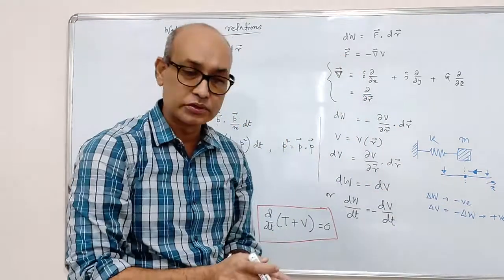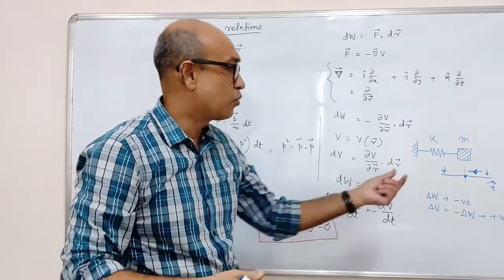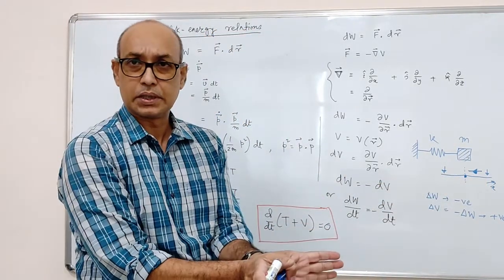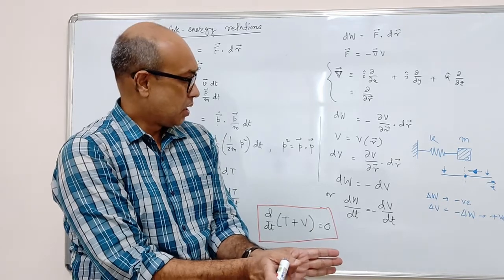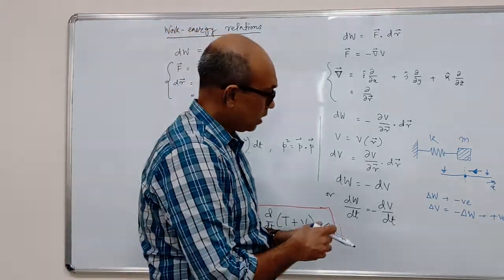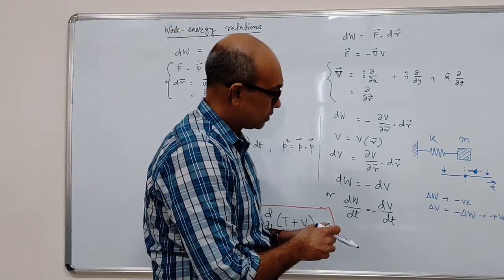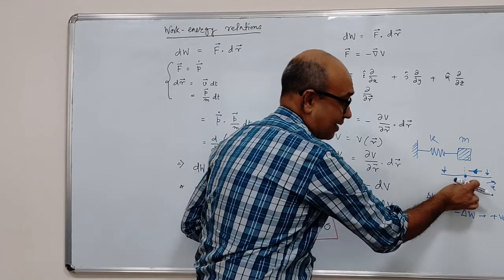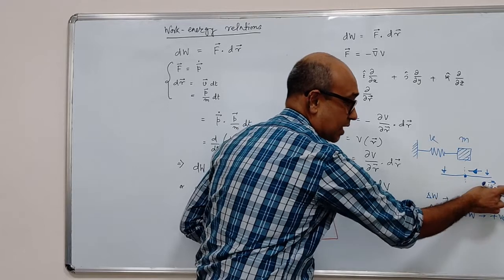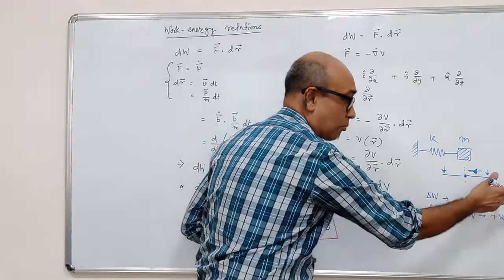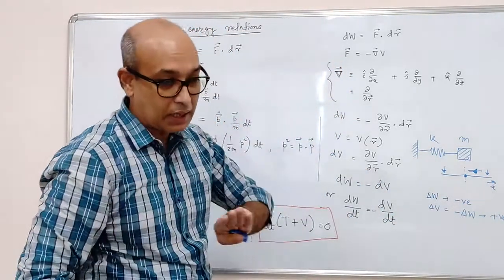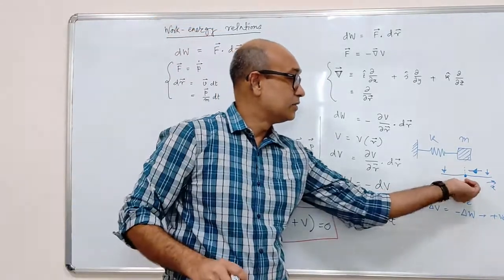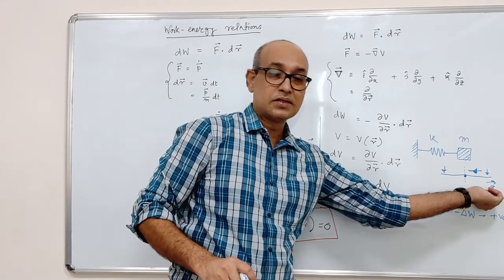Now what happens with the kinetic energy? Well, the kinetic energy was maximum here. As it goes there, it loses kinetic energy completely. So you can get rid of the work and you can say that the kinetic energy got converted to potential energy.